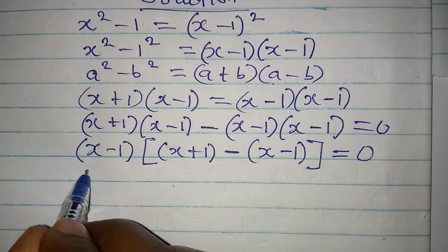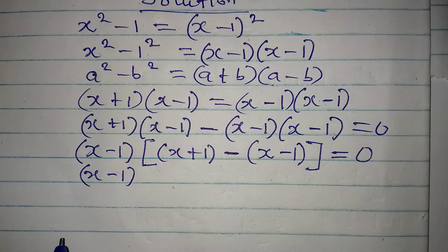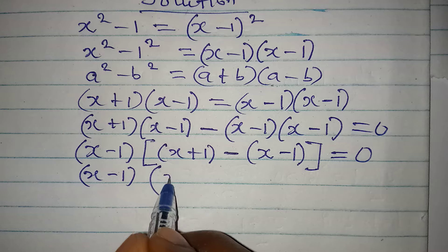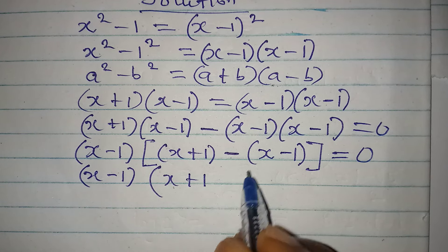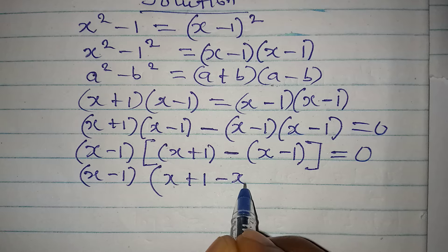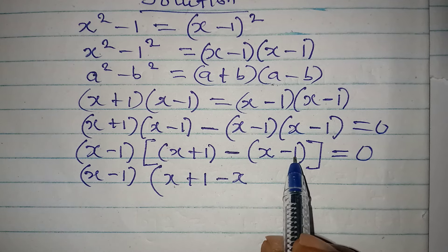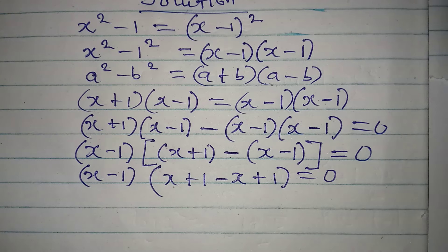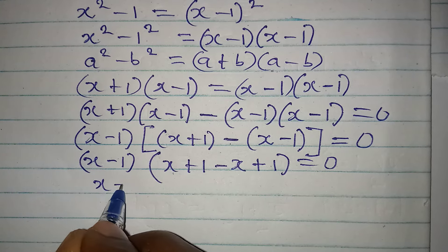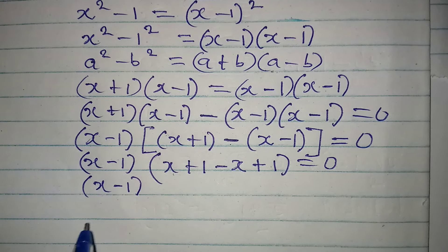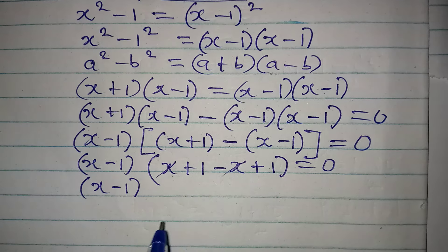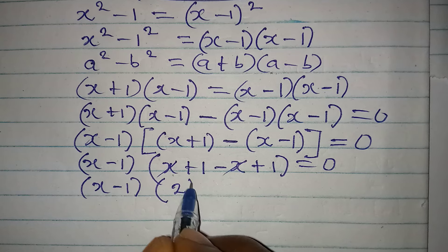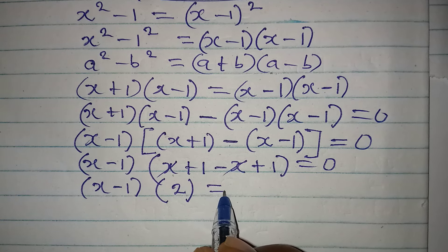x minus 1 is still out as a common factor. Then in here, I can open the bracket. We have x plus 1. Then negative times x will get negative x, and negative times negative 1 will give us positive 1. Then this is equal to 0. From here, x minus 1 comes down. Then this can cancel this. And then we have 1 plus 1, which will give 2. And that will be equal to 0.